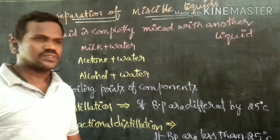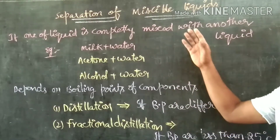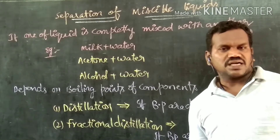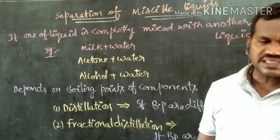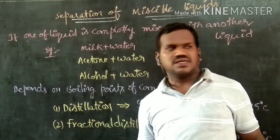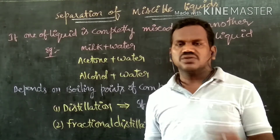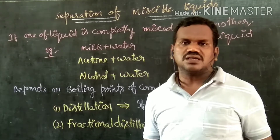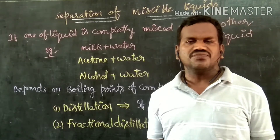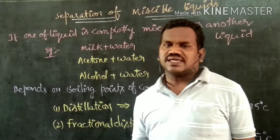Hi students. Today we are going to discuss about separation of miscible liquids. As we already discussed the separation of immiscible liquids — immiscible liquids are those where one liquid does not mix with the other, for example oil and water, kerosene and water, diesel and water, petrol and water. Those are already discussed, and how they are separated by the process of the separating funnel we already covered.